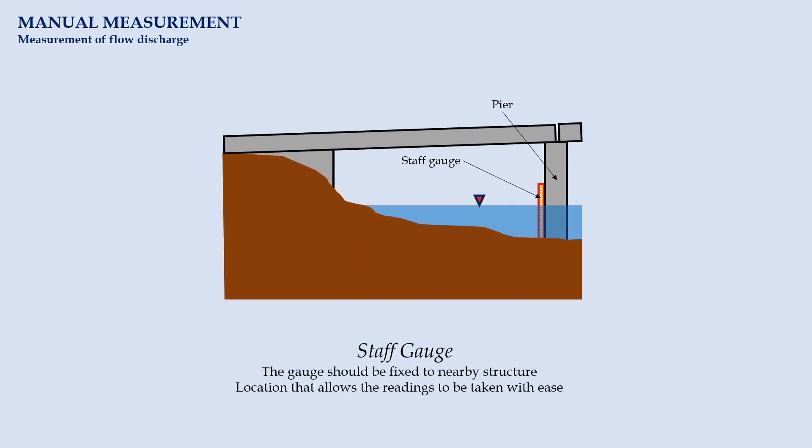The simplest way to measure the stage of a stream is by using staff gauge. The gauge should be fixed to a structure nearby while staying in contact with the water surface. Some examples of such structures are abutment and pier. Staff gauge should be fixed in such a way that allows the observer to take its readings from a distance with ease.